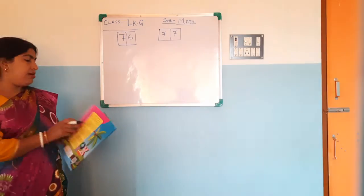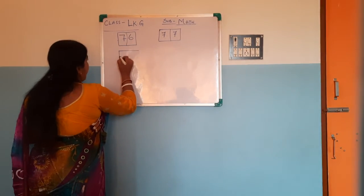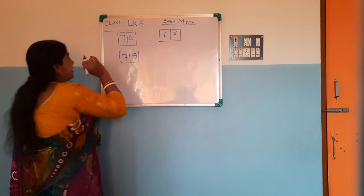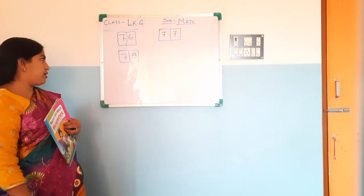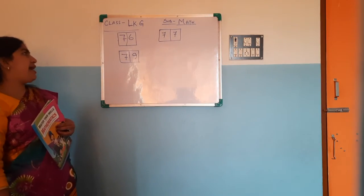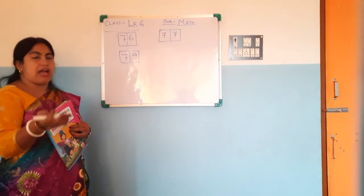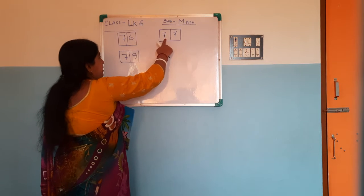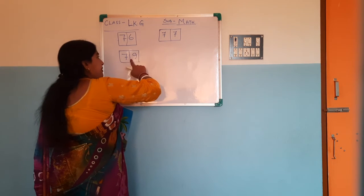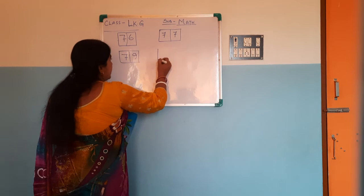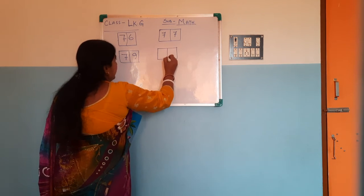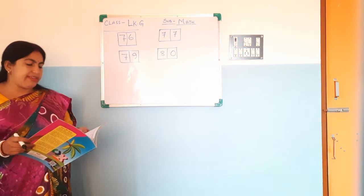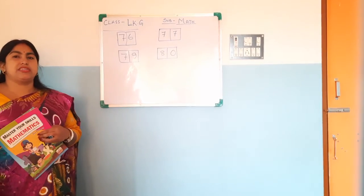Moving to the next number. That is 79. So what comes after 79? Look at the board very carefully. Count the numbers: 76, 77, 78, 79 — and then comes 80. After 79 comes 80.